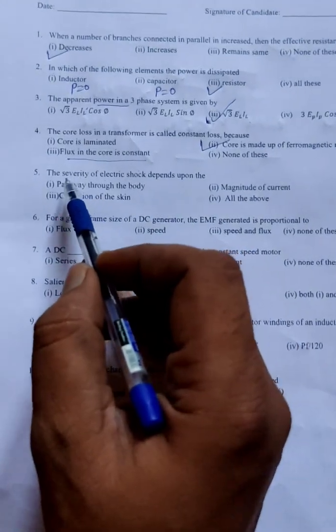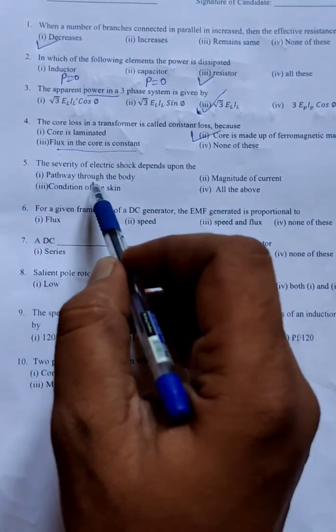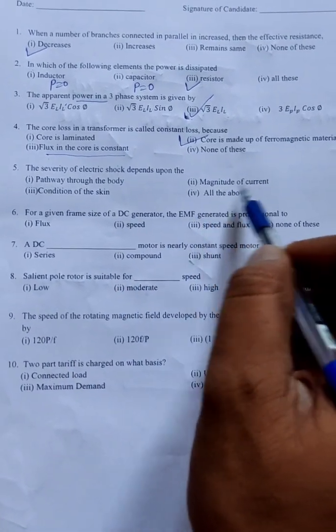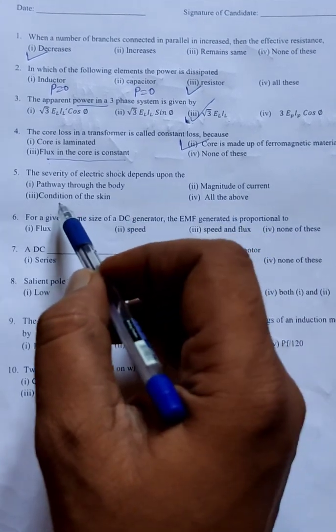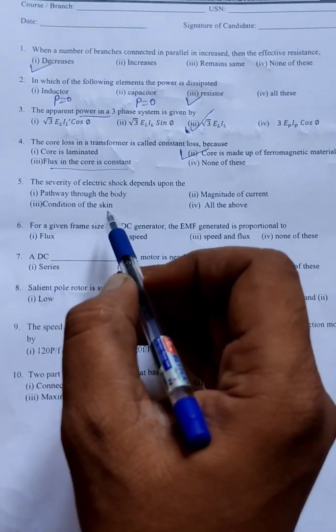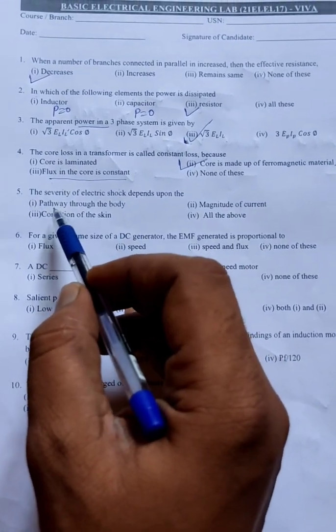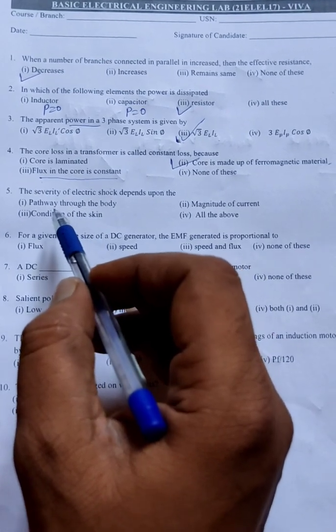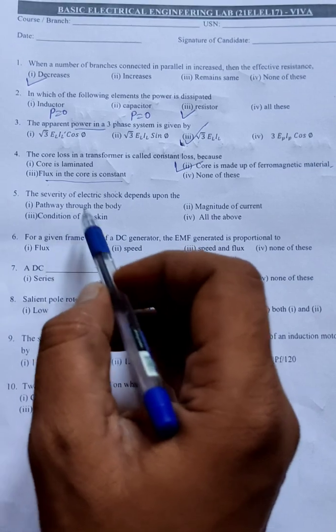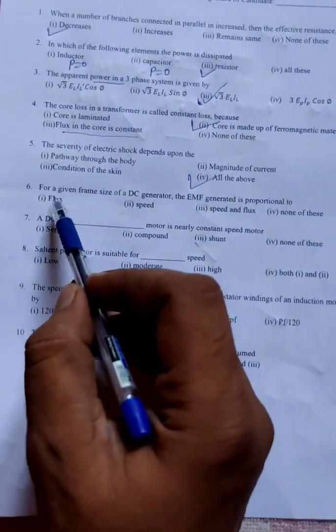The severity of electric shock depends upon pathway through the body, magnitude of the current, definitely magnitude of current shock depends, condition of the skin. If the person is having dry skin or wet skin, based on that the severity of shock will depend, and also whether the person is standing or sitting or sleeping. Different path will be produced. So all of this is the correct option.